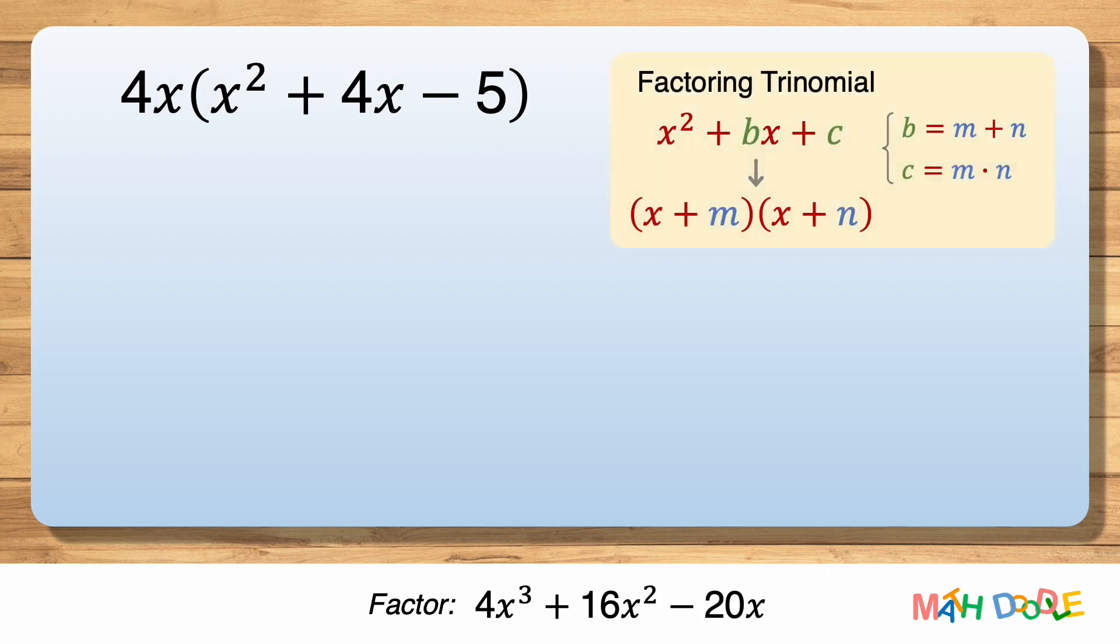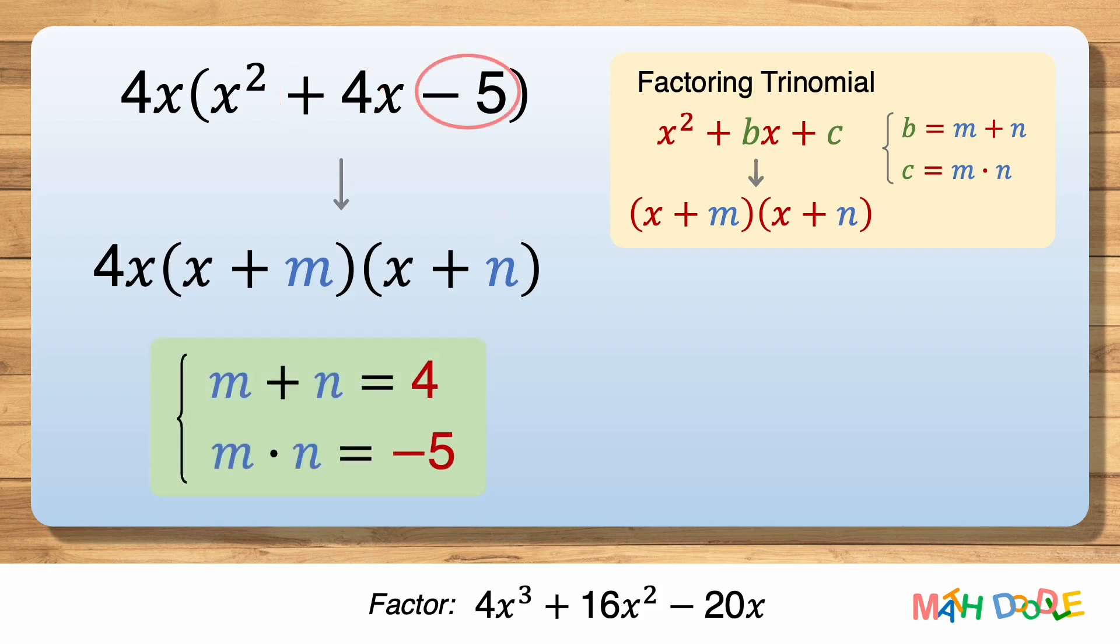Now let's use this property as a guide to factor the expression. To transform this trinomial into the form of 4x times (x + m) times (x + n), we must find the values of m and n. But we know m + n is 4 and m times n is -5.